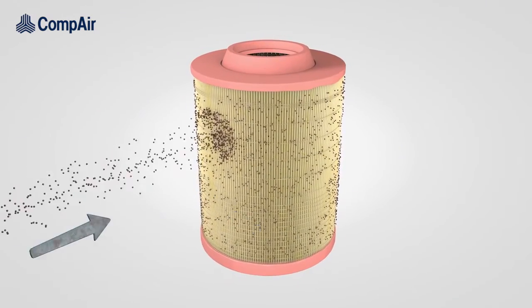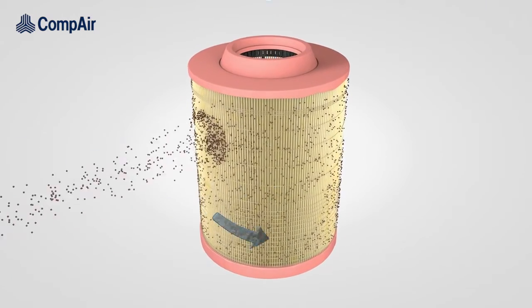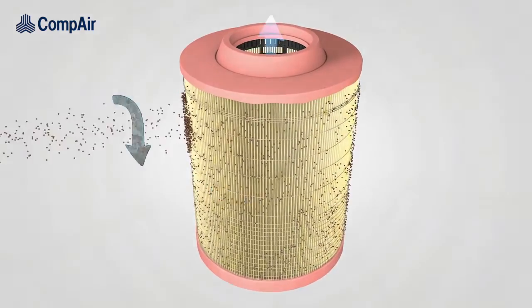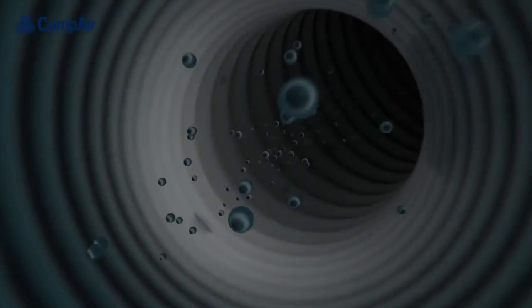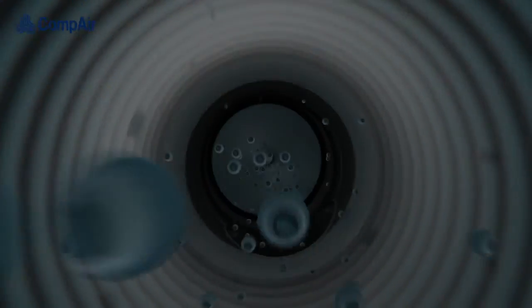But CompAir air filters not only hold back the coarse particles, they also stop the smallest troublemakers from entering the system and so reduce the strain on the air oil separator and oil filter installed downstream.